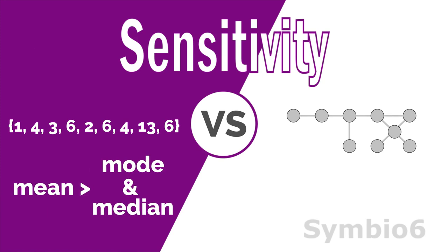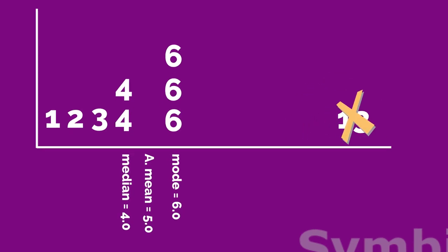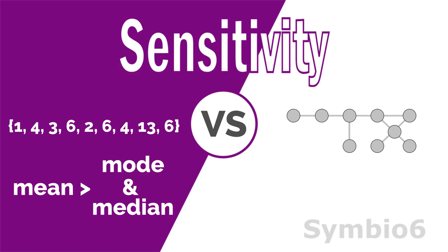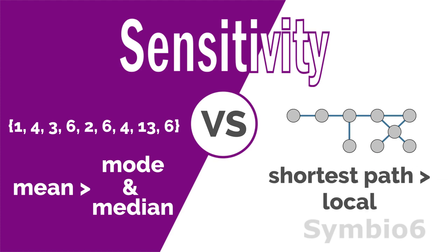The mean is more sensitive to outliers than the mode or median. Similarly, centrality measurements of networks can also be sensitive — when we add or remove links, the node centrality may change. Centralities based on the shortest path are usually more sensitive than local measurements such as degree centrality.